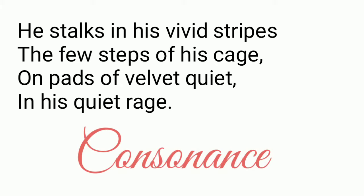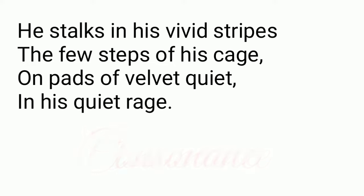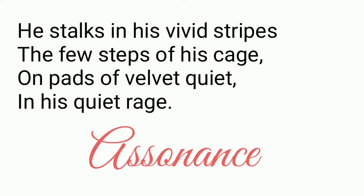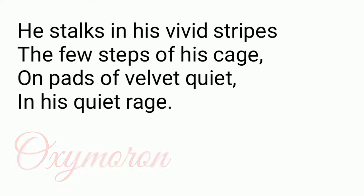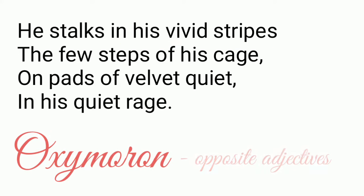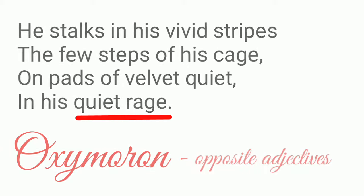Consonance is also used — when you read 'stalks his stripes,' the sound of 'S' is quite evident, so consonance has been used by the poet. You will also see assonance: the vowel sound of 'I' is repeated in the line 'in his vivid stripes.' And then the last line has oxymoron, which means using adjectives that are opposite in meaning. In the last line you see 'quiet rage' — both are extremely opposite — so here we have oxymoron.